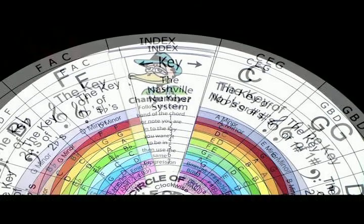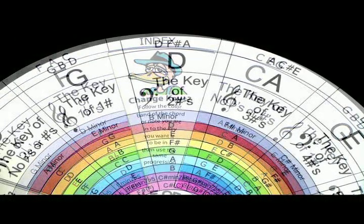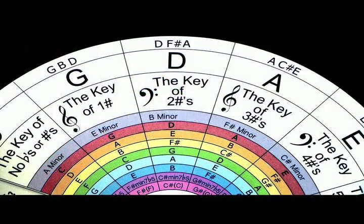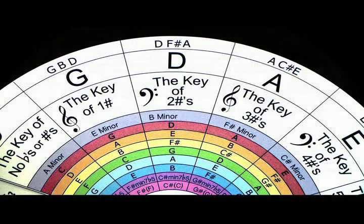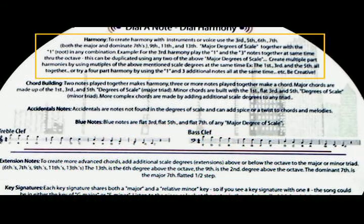1. The Nashville number system. 2. How to change keys in a hurry. 3. How to tell what key sheet music is in just by looking at the key signature. 4. How to create harmony immediately.